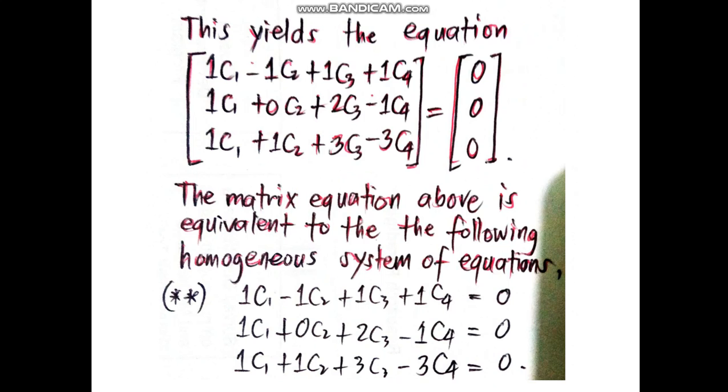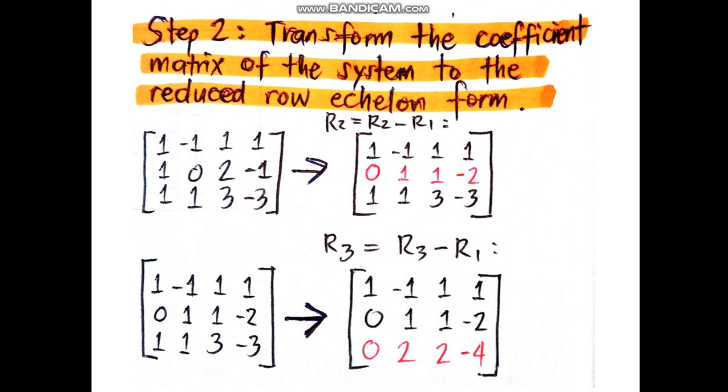The second step is to transform the coefficient matrix to the system to the reduced row echelon form.